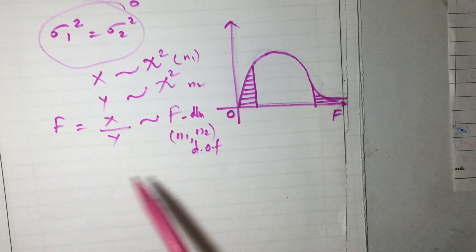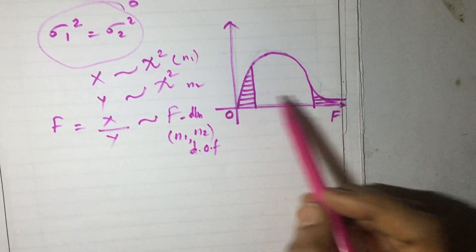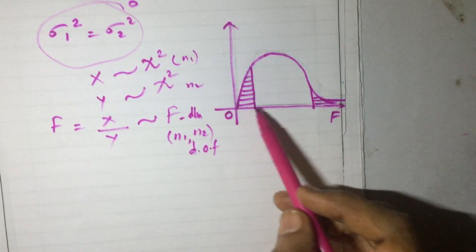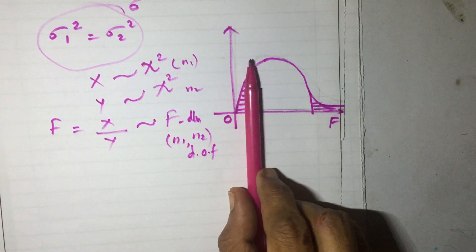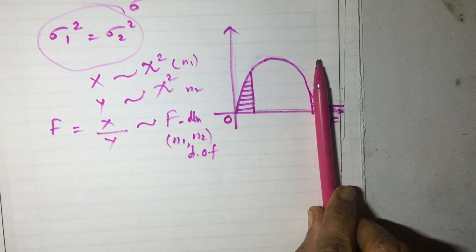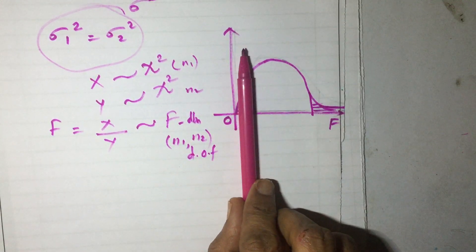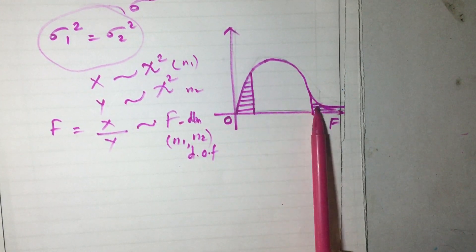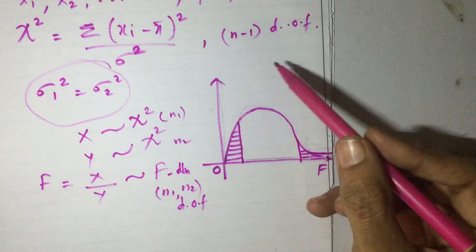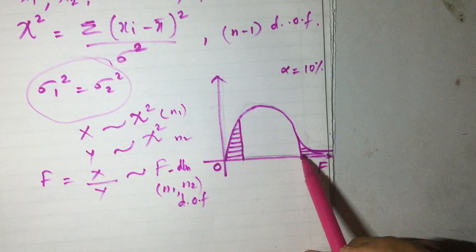The shape of the F distribution is such that in a two-tailed F-test, both tails are shaded as rejection regions. If it is one-tailed — either right or left — only one shaded portion is the region of rejection. In a two-tailed test with level of significance alpha equal to 10%, each tail will have 5%, meaning alpha by 2 in each tail.